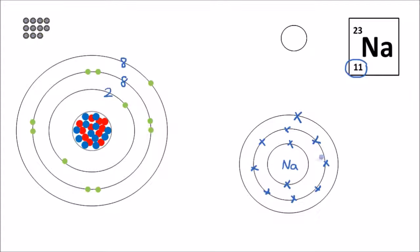We can draw this as an electronic structure diagram, and we can also represent it in number format. So you would write two, eight, one. You can represent sodium in both ways.